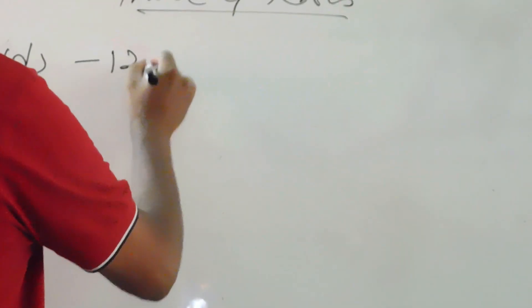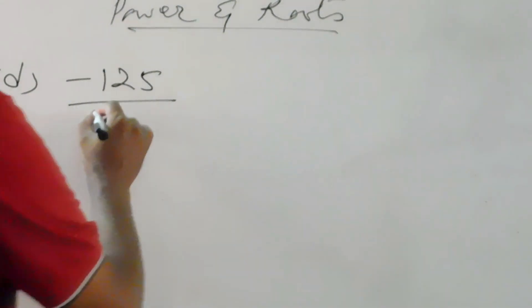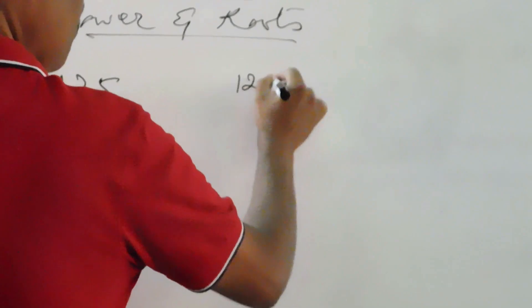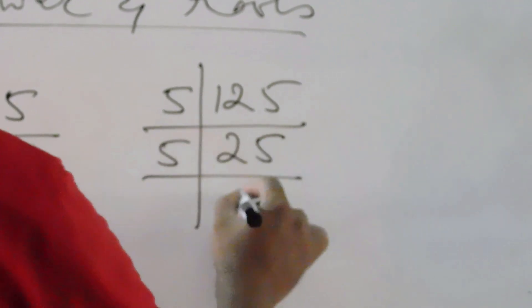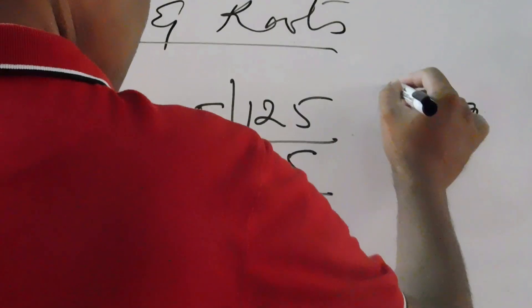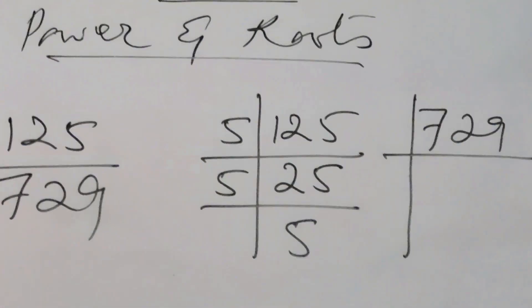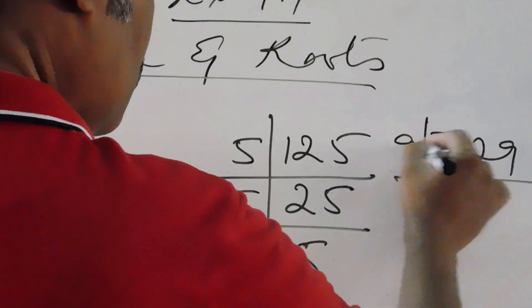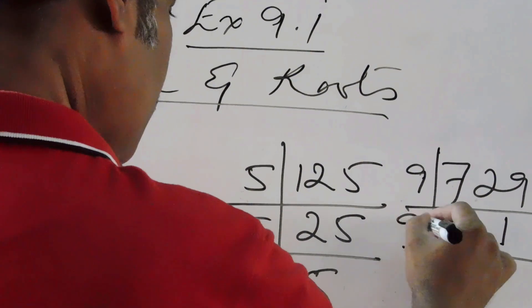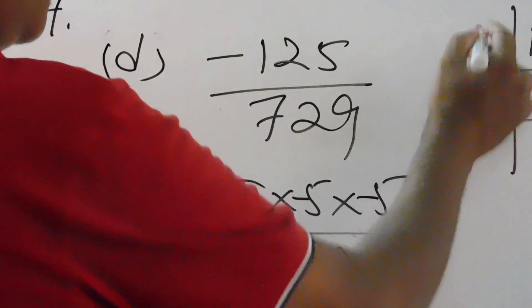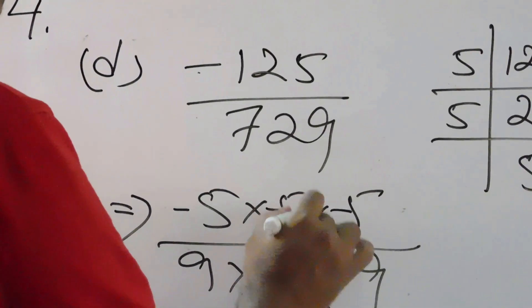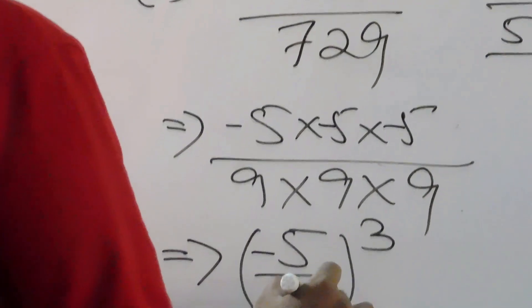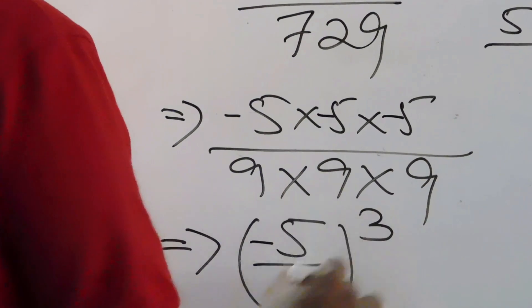Question number D, the last question: minus 125 by 729. Factorize: 125 divided by 5 gives 25, divide by 5 again gives 5. For 729, divide by 9 gives 81, divide by 9 again gives 9. Since the numerator is minus 125, when you write it out you have minus 5 into minus 5 into minus 5. Convert to exponential form: take minus 5 by 9 as the base, put in bracket to the power 3.